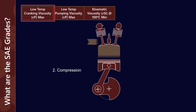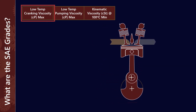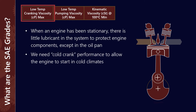With an engine in operating condition, lubricant is flowing all around the engine and lubricating all the major components. However, when it's been stationary for a while, there isn't much lubricant in the system to protect the engine — we have some in the oil pan, but everything else has drained into the sump. So with low temperatures, what we're concerned about is engine startup and protecting the engine at startup. The low temperature cranking viscosity is a measure of cold crank performance, allowing the engine to turn over when we start it. At cold temperatures, the viscosity of the lubricant increases by quite a lot.